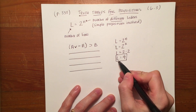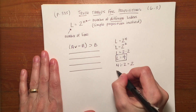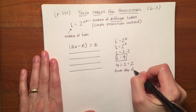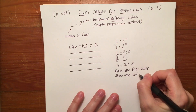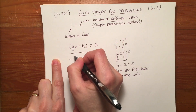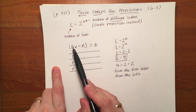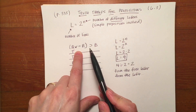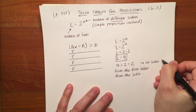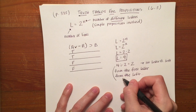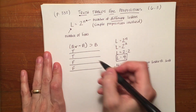The way it's set up is you take your number of lines and divide it by 2. Four divided by 2 is 2. So for the first different letter from the left, you're going to put two trues and two falses. You always go from the first different letter from the left to the next different letter from the left. Then you divide that in half again: 2 divided by 2 gives us 1 for the second letter from the left.